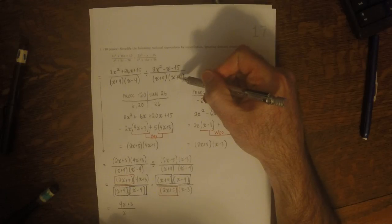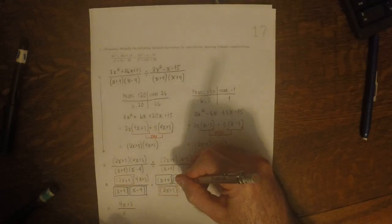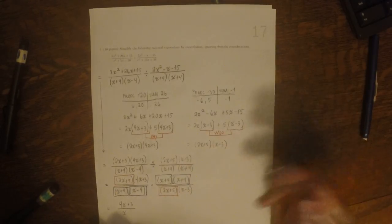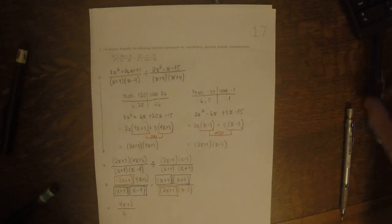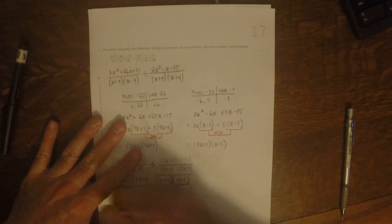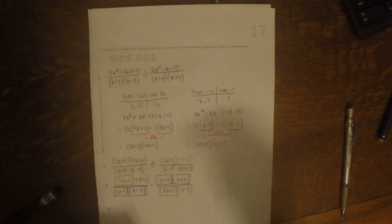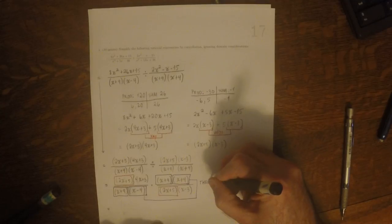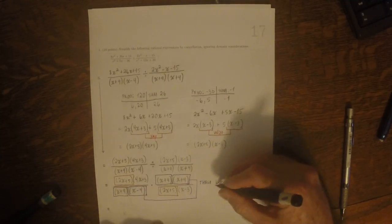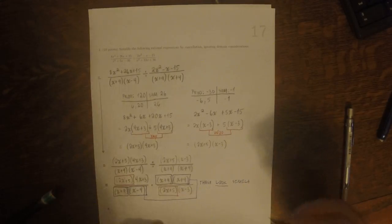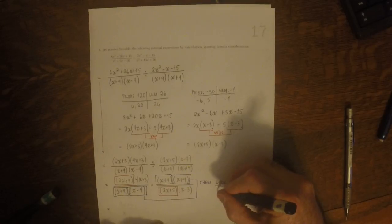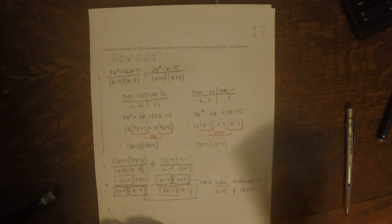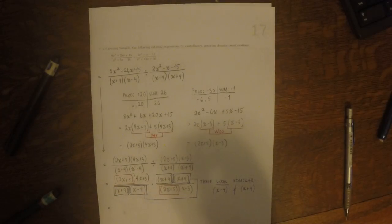Wait — looking at the top here, that's x plus 4. So this is x plus 4. When I copied it down, I almost overlooked that. So x plus 4 and x plus 4 — let's note that x minus 4 and x plus 4 look similar, but they are not the same, so they do not cancel away.